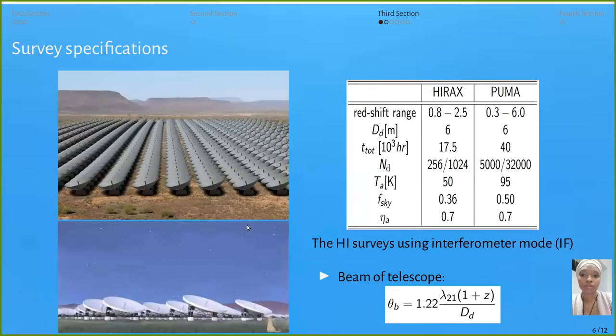The survey specifications we are focusing on are interferometer modes: HIRAX and PUMA. For HIRAX, we have 256 number of dishes and 1024 dishes. For PUMA, 5k dishes and 32k number of dishes. They all have similar specifications. The beam of the telescope depends on the diameter of the dish, shown in the table above.